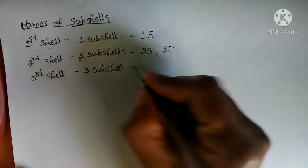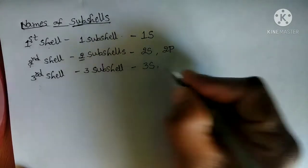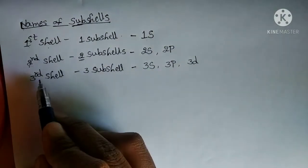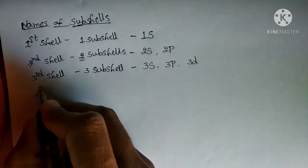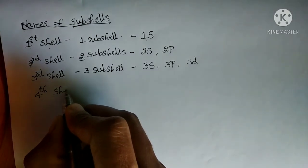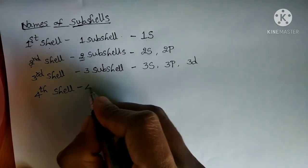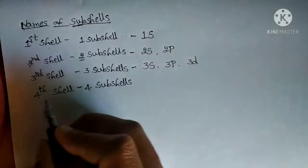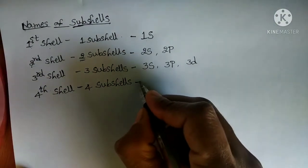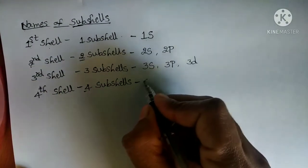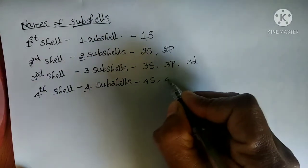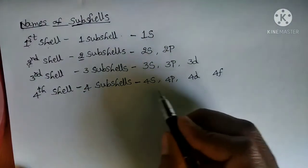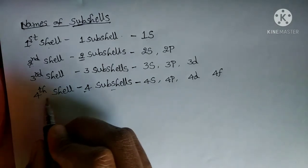The names of the three subshells in the third shell are 3s, 3p, and 3d. Next, in the fourth shell, four subshells are present. The names of those four subshells are 4s, 4p, 4d, and 4f.